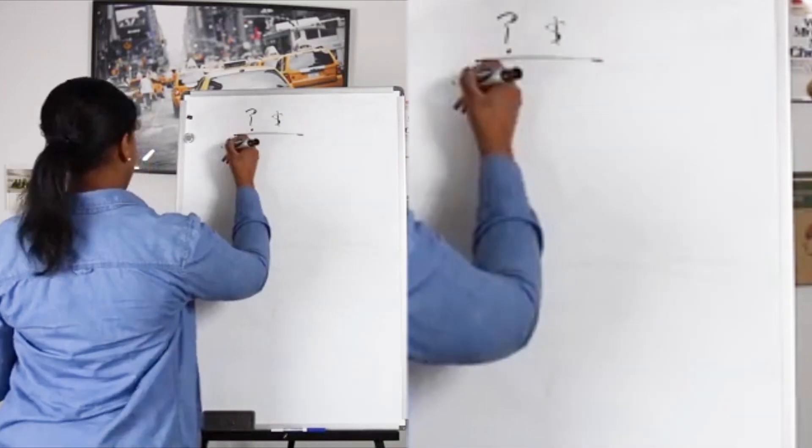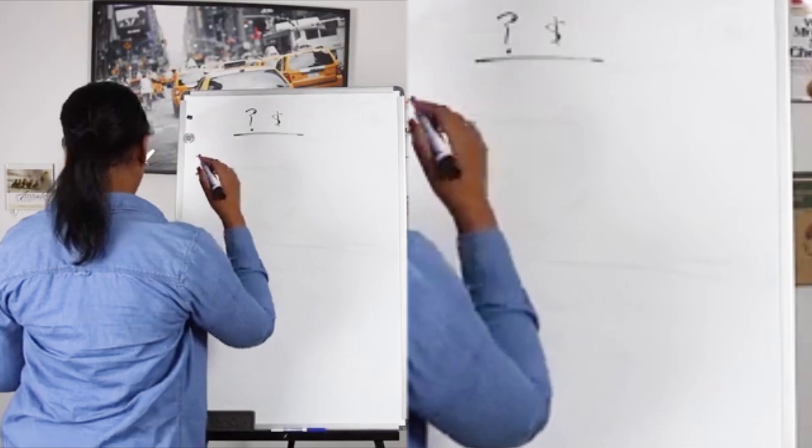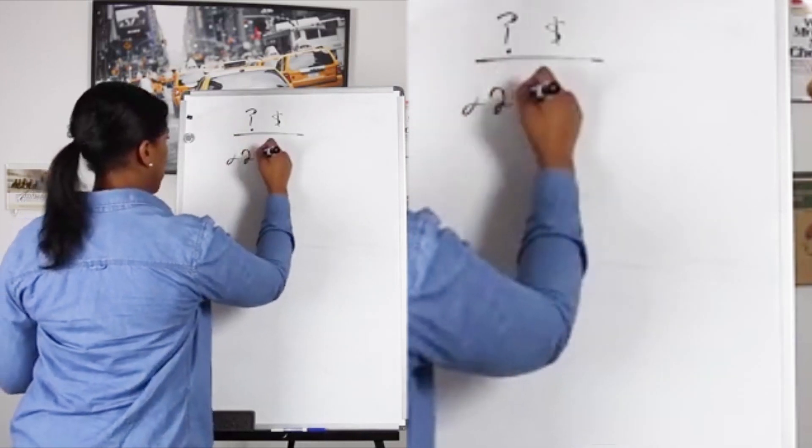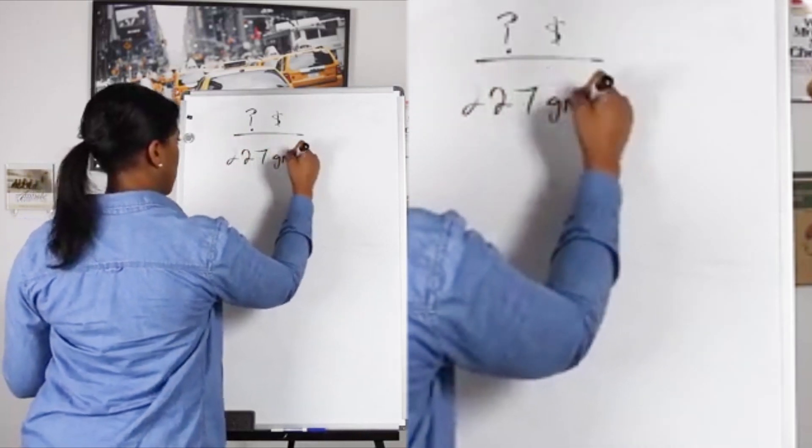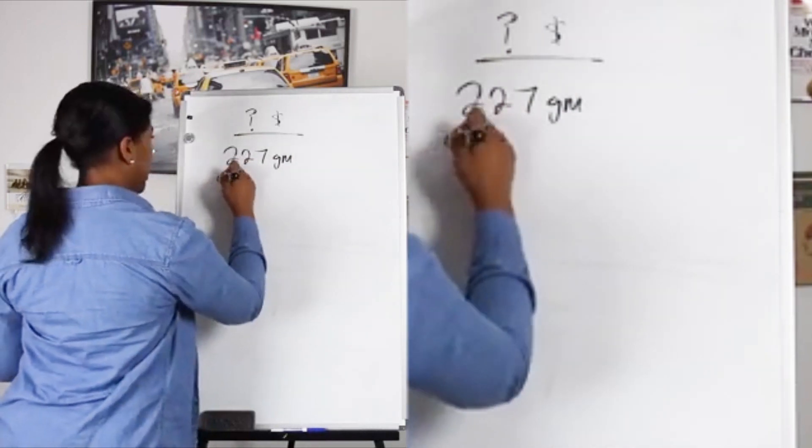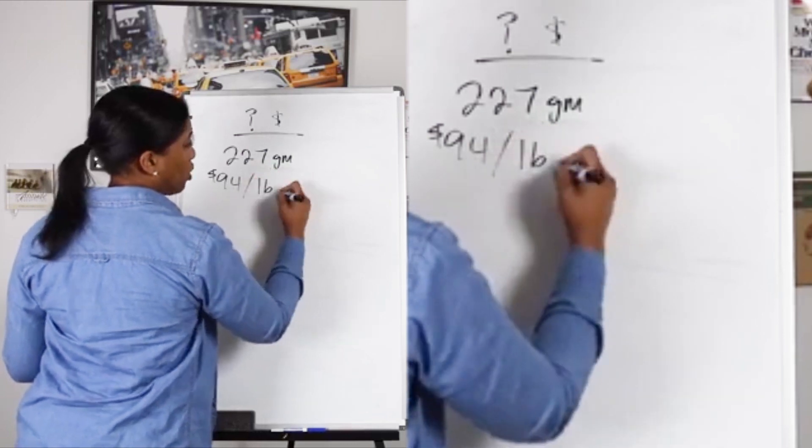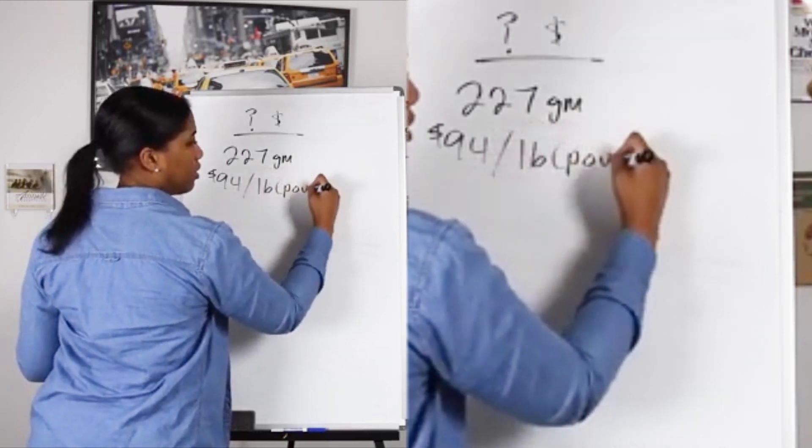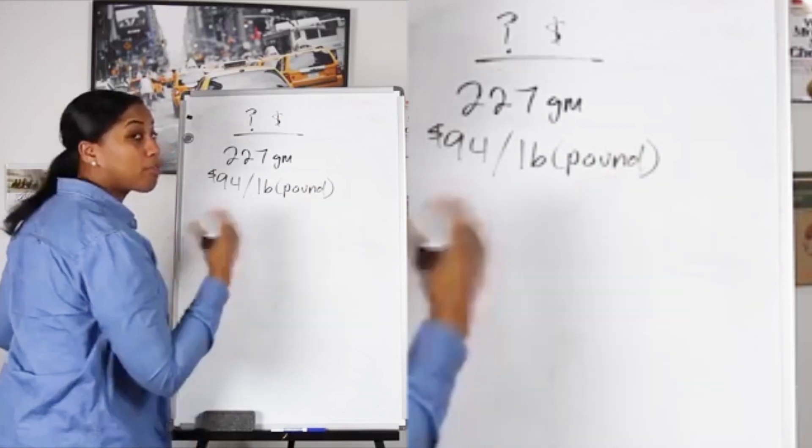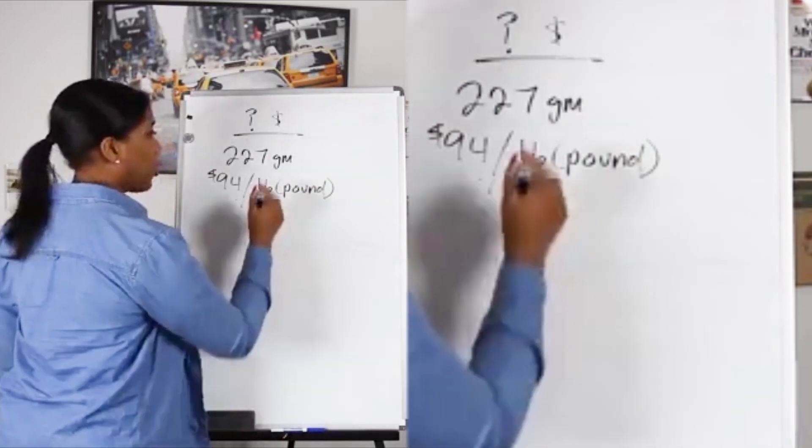So basically what you do is see what you're given. They said it's 227 grams, and we know also that it's $94 per pound. LB is just short for pound.